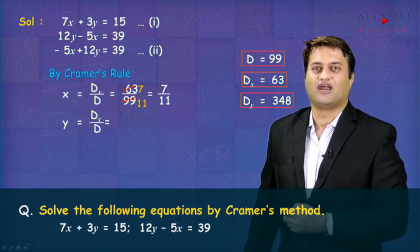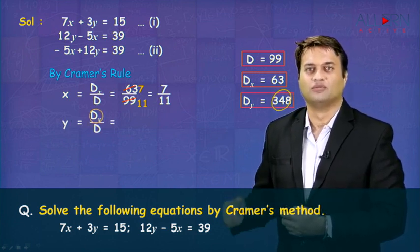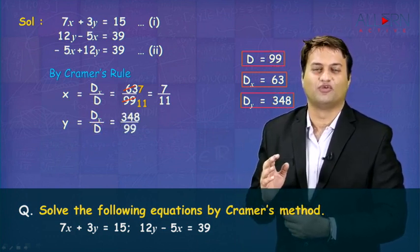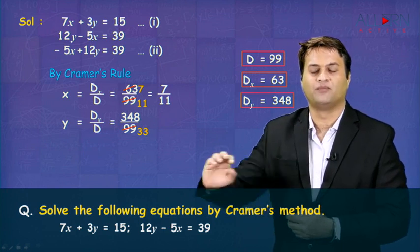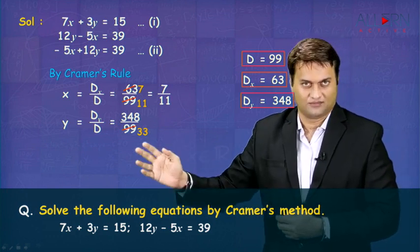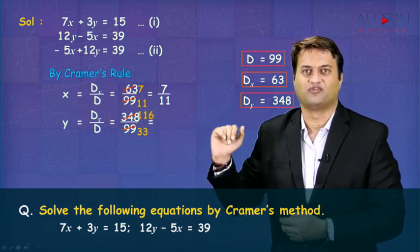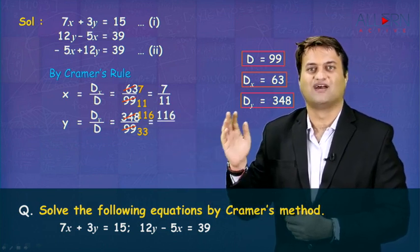Y is equal to DY upon D, which is equal to 348 upon 99. So be a little careful here, 348 upon 99. So it is 3, 33 into 99 and 3, 116 are 348. So it is 116 upon 33.